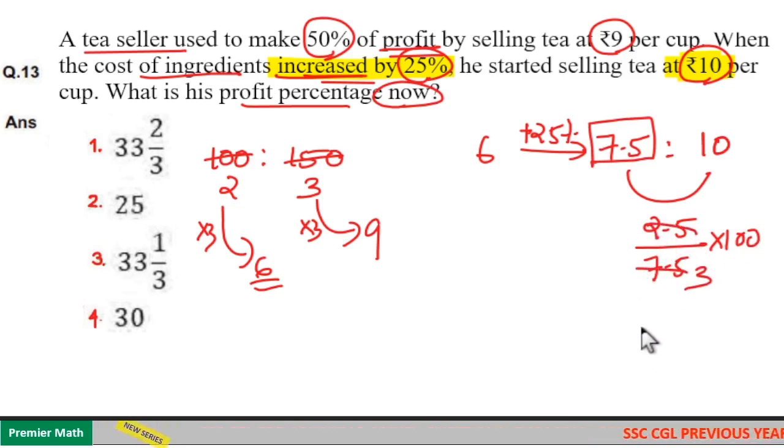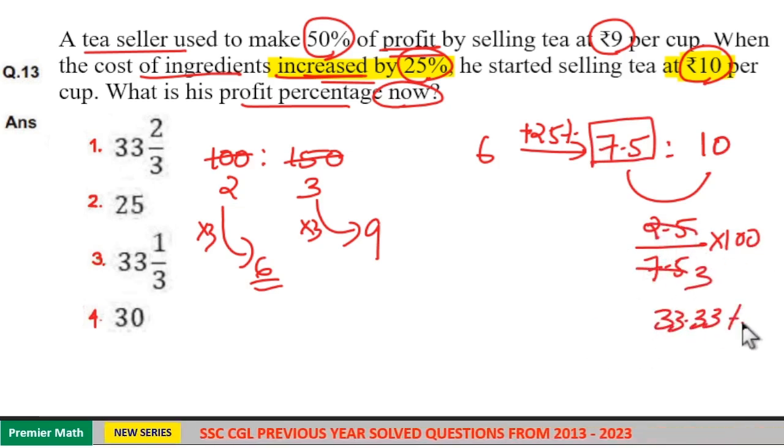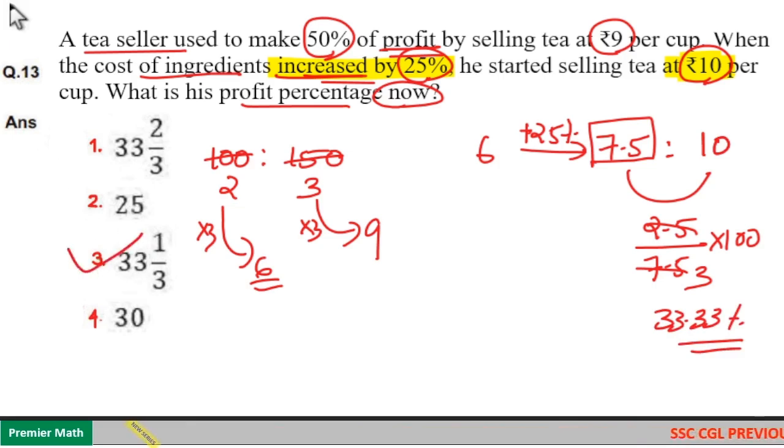So this is 1 by 3 into 100, means 33.33 percent. Option 3 is your answer.